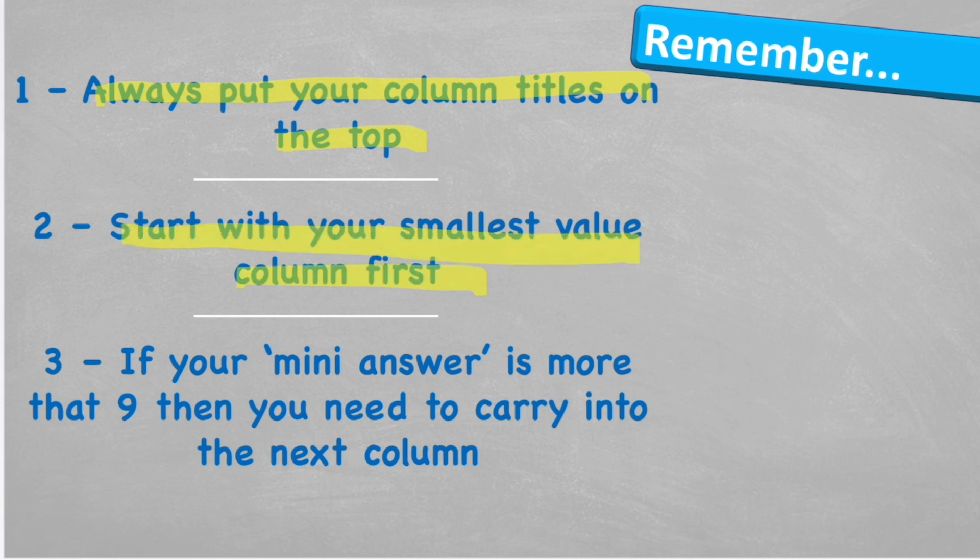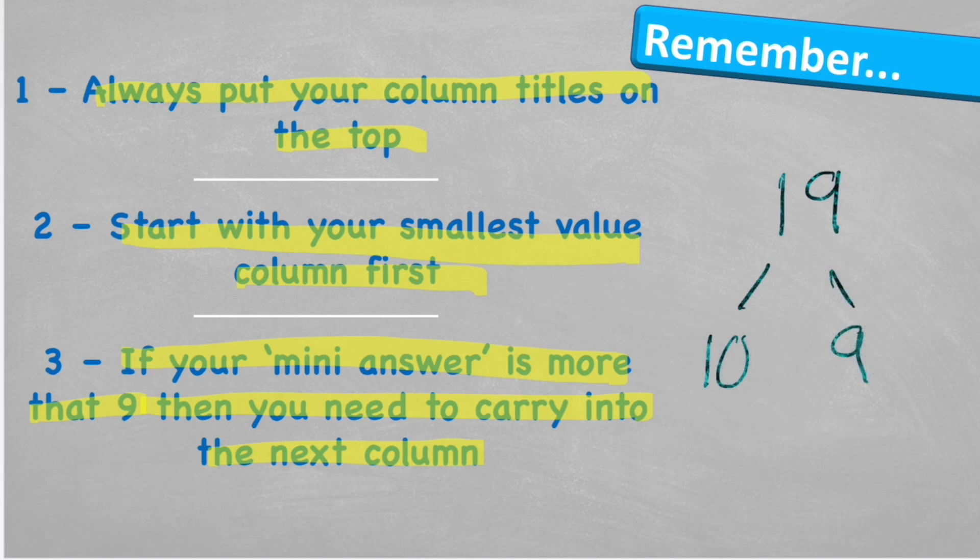Start with your smallest value. In this case, we add 1s as being our smallest. If your mini answer is greater than 9, then you're going to need to carry it into the next column. And we can understand that by realizing that if we get an answer of, let's say, 19, well, a 19 is actually a 10 and a 9. So I can carry the 1 ten across and put my 9 in the answer column.